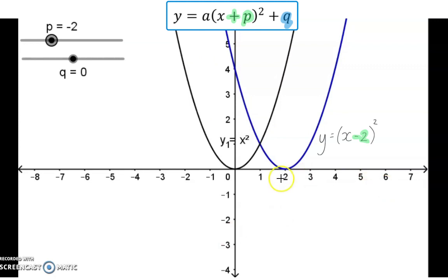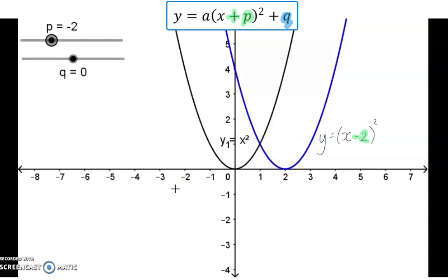Here you can see that for the first time, the coordinate of the turning point and that of the y-intercept differ because the graph also moved horizontally.